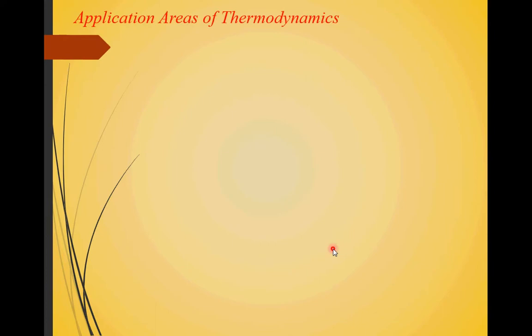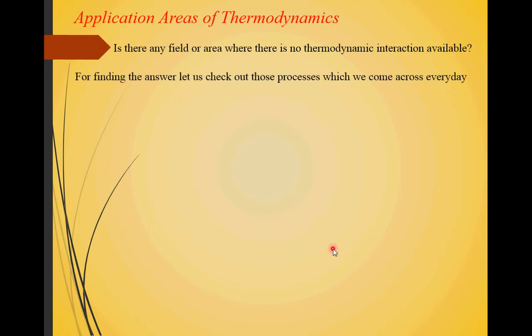Now let us look at application areas of thermodynamics. The question is: is there any field where there is no thermodynamic interaction? Let us check out processes we come across every day. The first example is cooking food in a pressure cooker. The pressure cooker and the substance inside it form the system. When heating it for cooking, we are supplying heat to the system — there is a heat interaction and something is transferred from the surroundings to the system. Obviously, thermodynamics is involved.